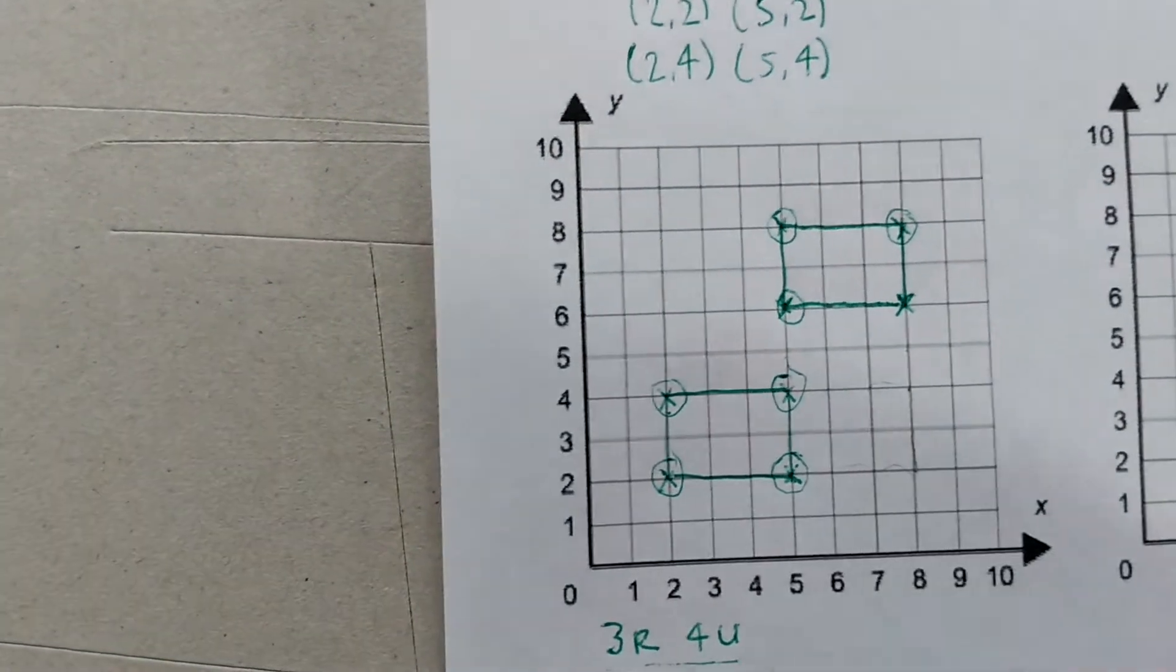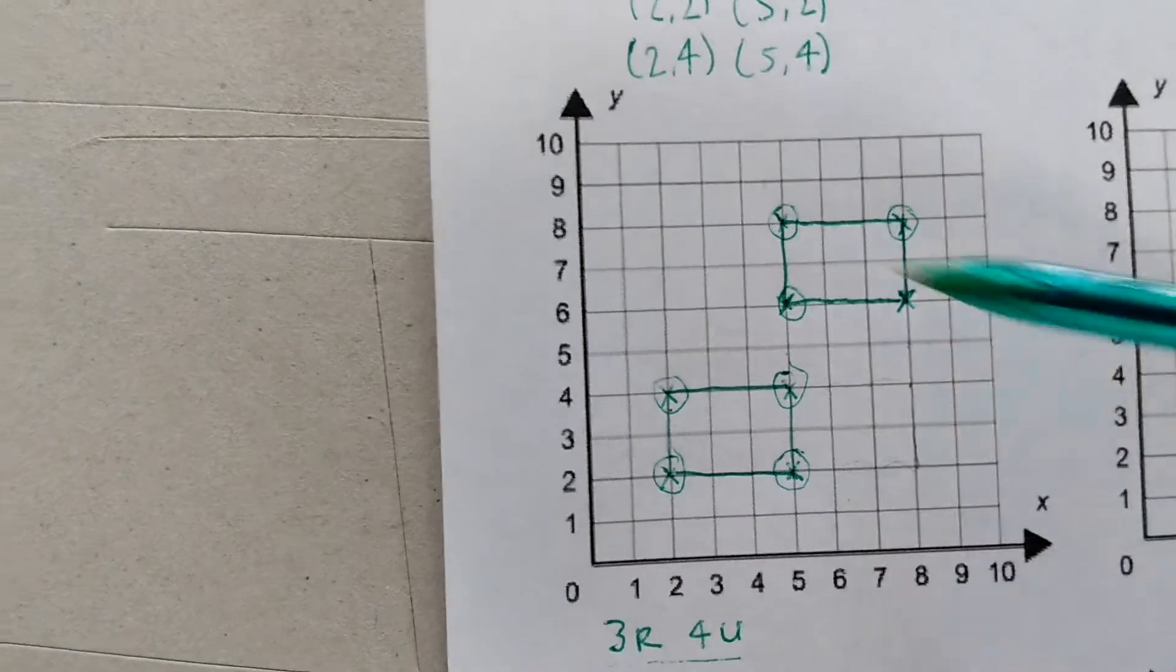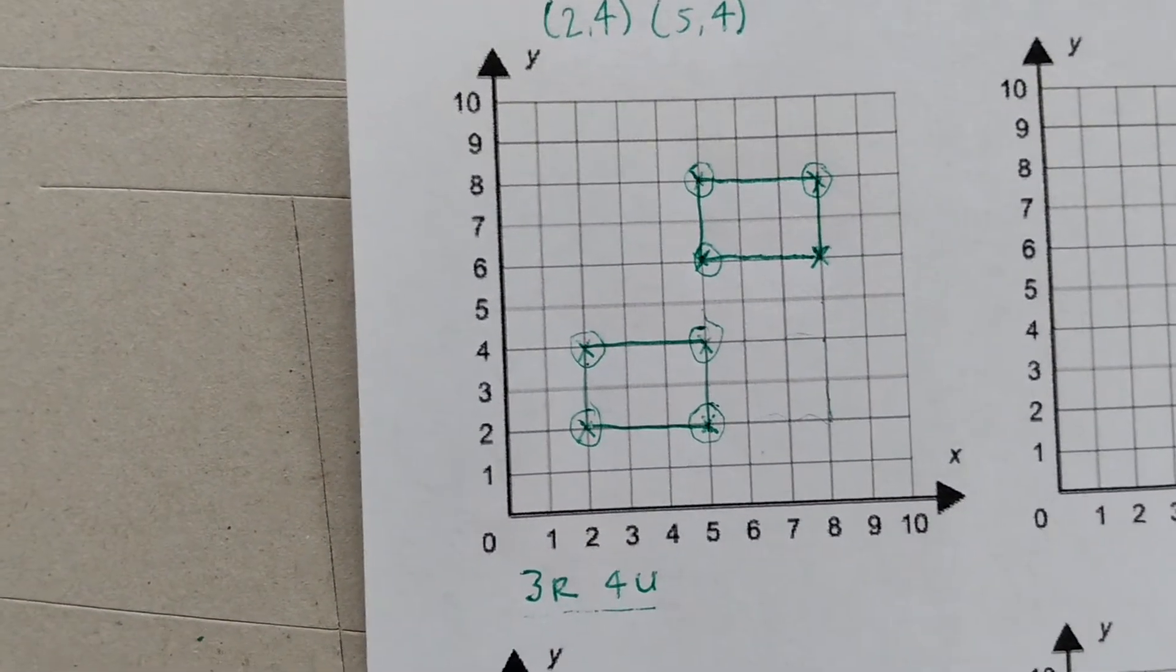Now to translate a shape you always go along the corridor before going up the stairs. So we definitely followed that rule.